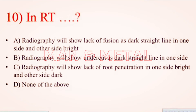Question 10: In RT: a) radiography will show lack of fusion as a dark straight line on one side and bright on the other; b) radiography will show undercut as a dark straight line on one side; c) radiography will show lack of root penetration as bright on one side and dark on the other; d) none of the above.